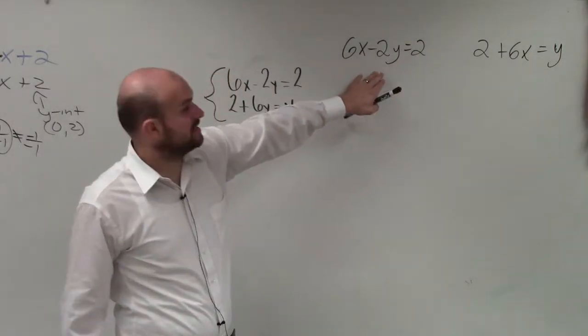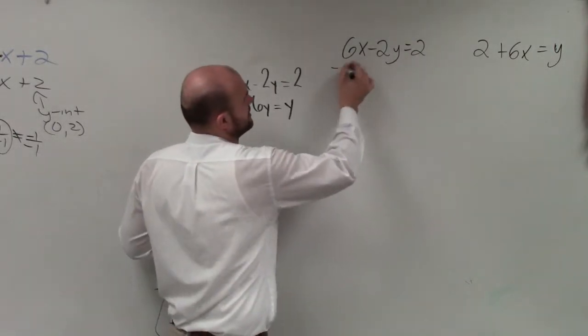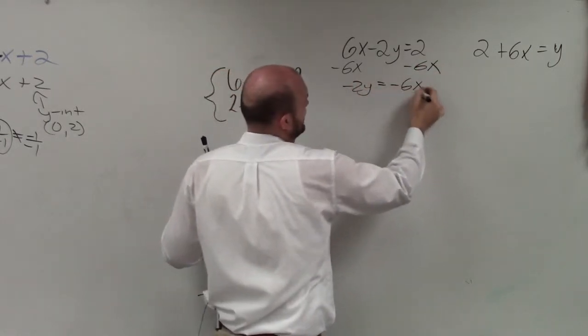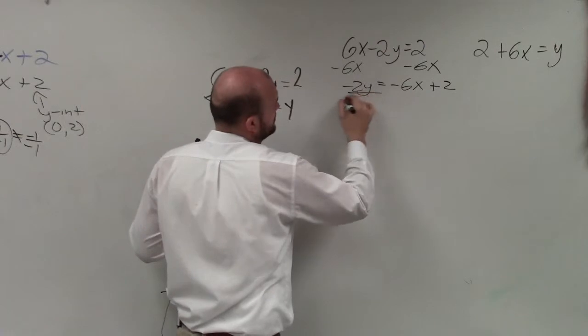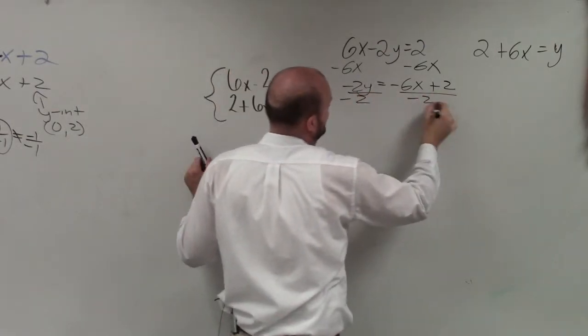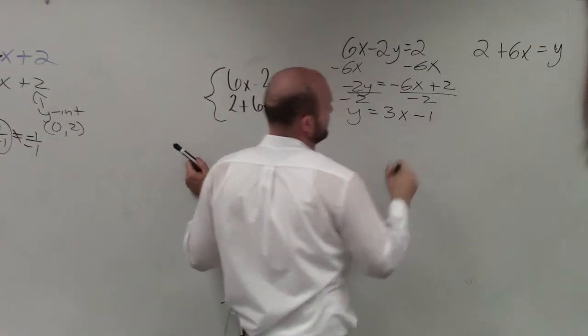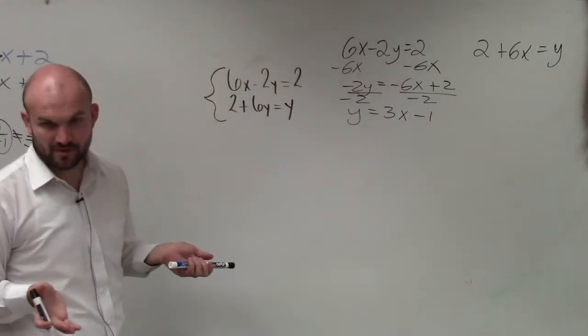So now for each one of these I need to solve for y. So I'll subtract 6x, subtract 6x. I have negative 2y equals negative 6x plus 2, divide by negative 2, divide by negative 2. y is equal to a positive 3x minus 1. Is everybody following with that?